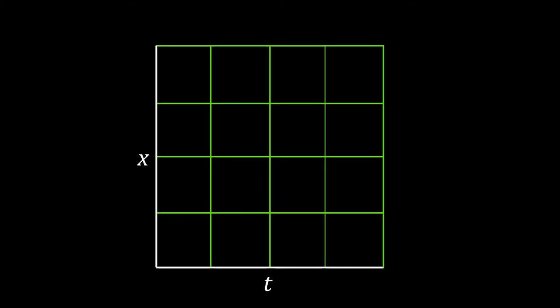Draw the x and t axes, and draw a grid with equally spaced grid points, just like those on graph paper. Take a grid point and draw an arrow at that position. The slope of this arrow is equal to the derivative of x at that position.